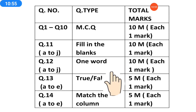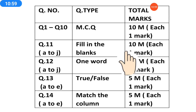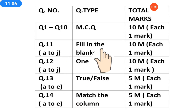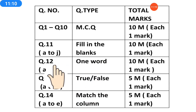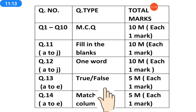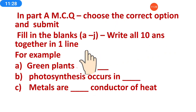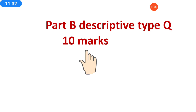So please remember: 10 mark MCQ, 10 mark fill in the blanks, 10 mark one word, 5 mark true-false, 5 mark match the column. The question numbers of one word and fill in the blanks can change, so don't worry if in the exam paper one word comes first or match the column comes first — whichever question comes first, you have to write and submit. Part B will be of descriptive type questions, 10 marks. In Part B, you can type the answers in the given space or upload the picture. Different questions will come one after another.